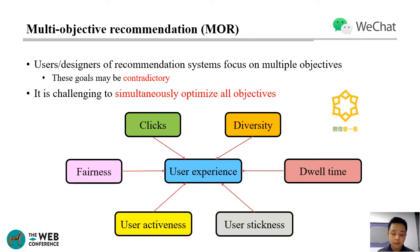Real-world recommendation systems usually have multiple objectives to meet users' diverse needs, which is noted as multi-objective recommendation. These objectives may include CTR, dual-time, user-activeness, user-stickness, and diversity. These objectives are often contradictory, and it is challenging to simultaneously optimize all objectives to improve the overall user experience.